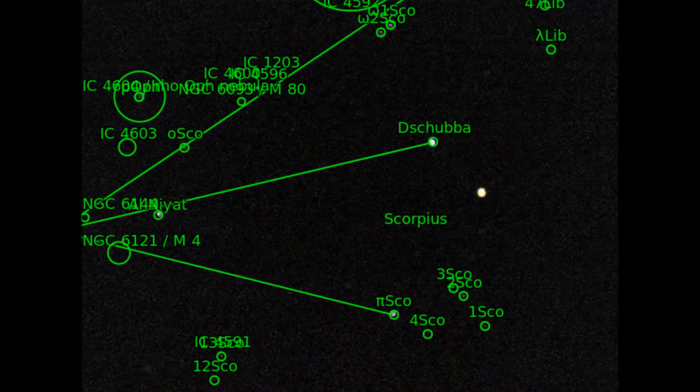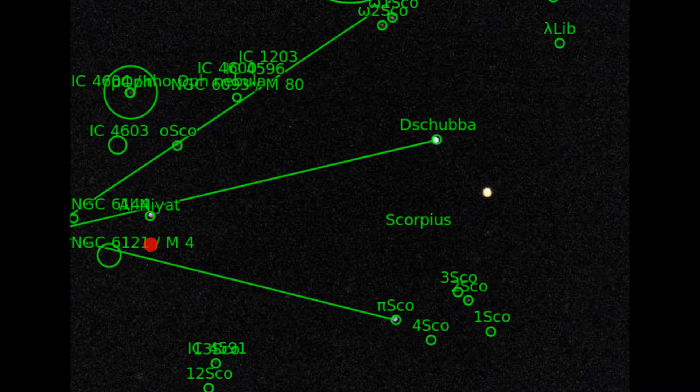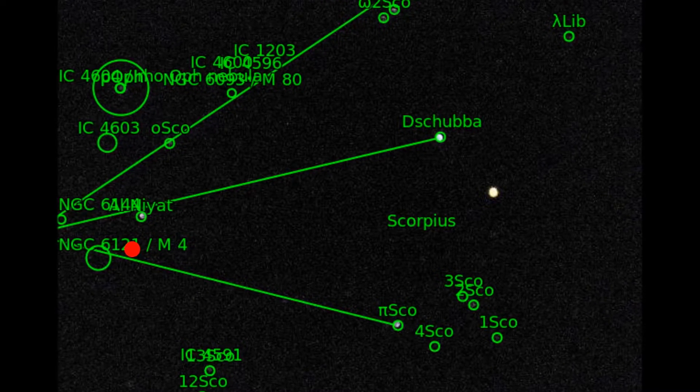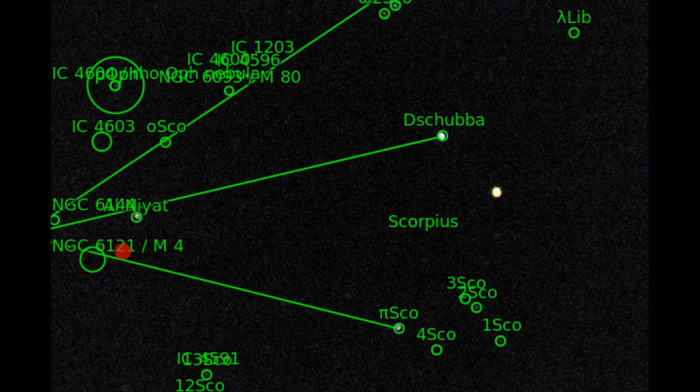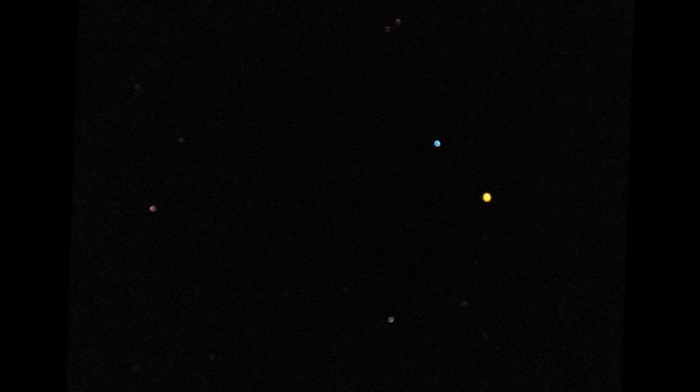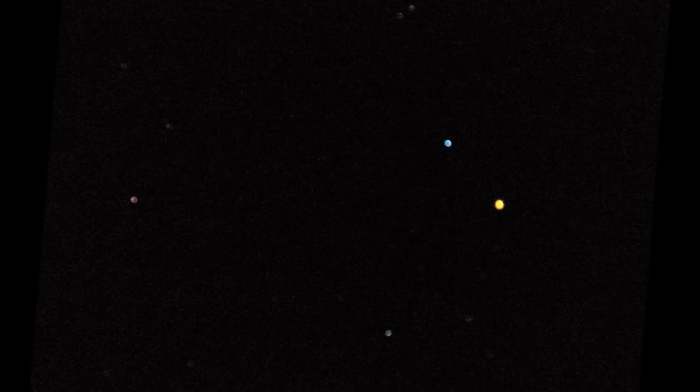Messier 4, or M4, also designated NGC 6121, is a globular cluster in the constellation of Scorpius. M4 appears about the same size as the moon in the sky. It's one of the easiest globular clusters to find. It's located 7,200 light-years away. Its age is 12.2 billion years old.